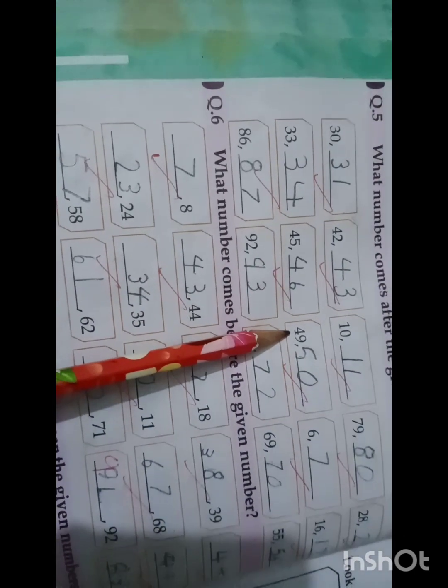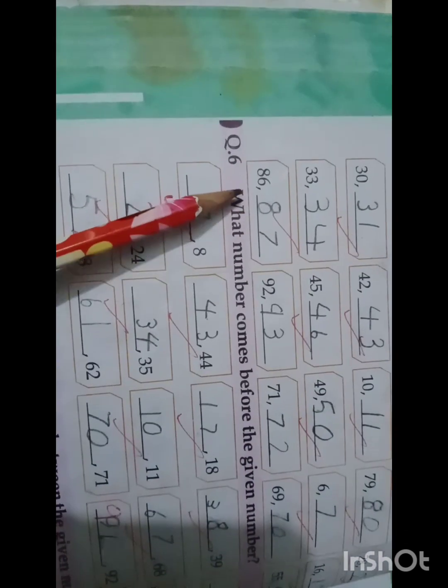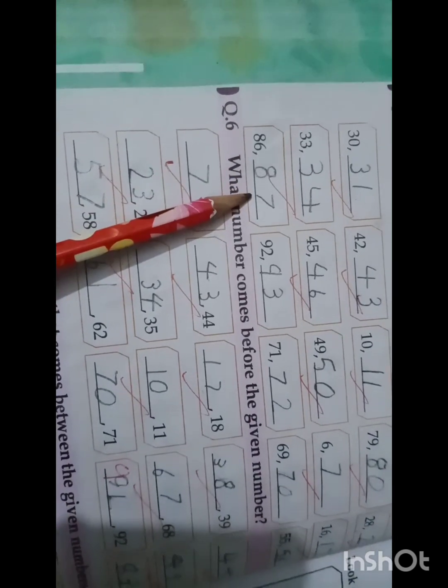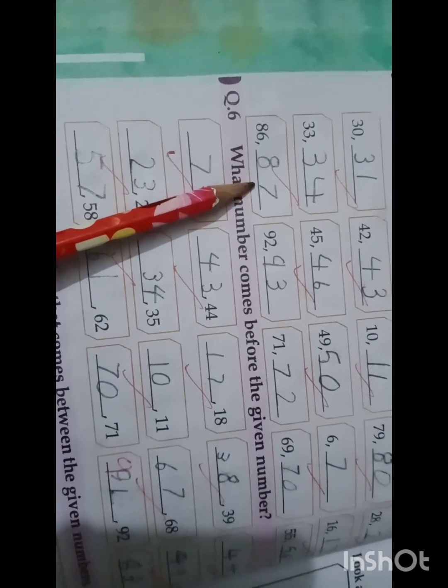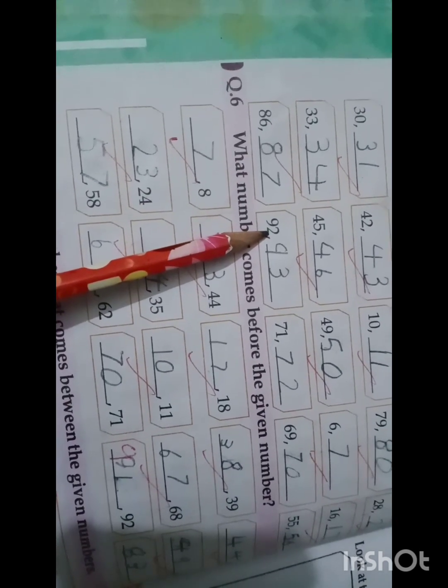After 49 comes 50. After 6 comes 7. After 16 comes 17. After 65 comes 66. After 86 comes 87. After 92 comes 93.